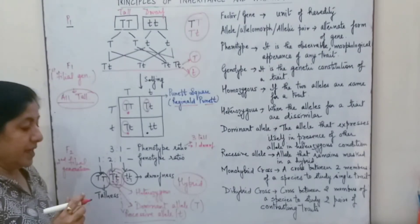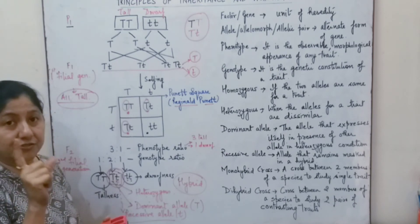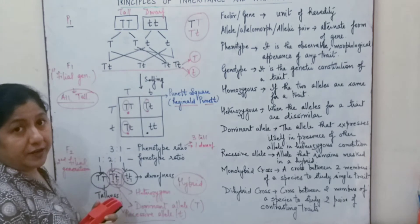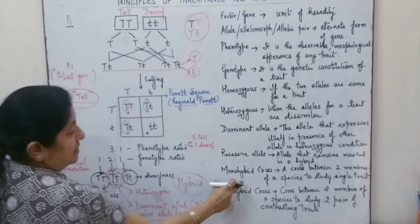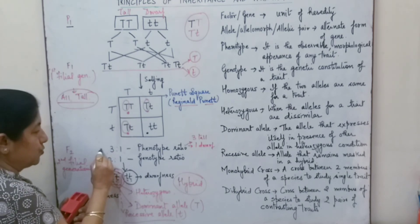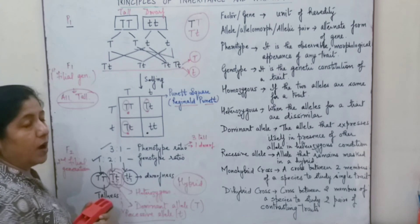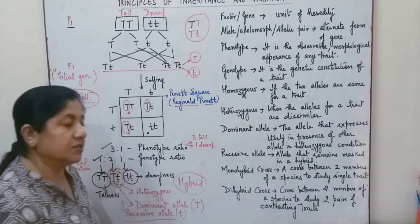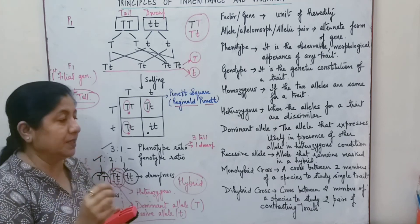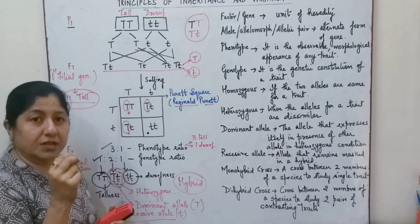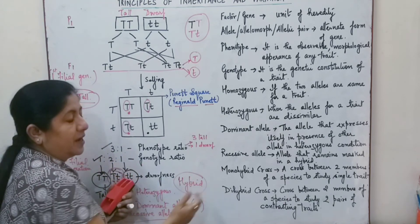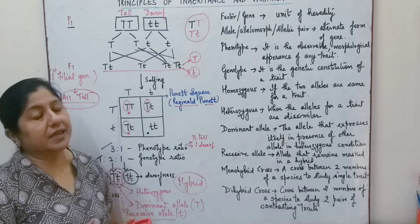Another term is the monohybrid cross — a cross studied for a single contrasting trait. Here we are using only one trait, that is tallness versus dwarfness, which is a single contrasting trait. That type of cross is known as a monohybrid cross. The phenotype ratio for a monohybrid cross is always 3:1, whereas the genotype ratio is 1:2:1. A dihybrid cross involves two pairs of contrasting traits — for example, studying flower color and tallness together — and that will be covered in following videos.